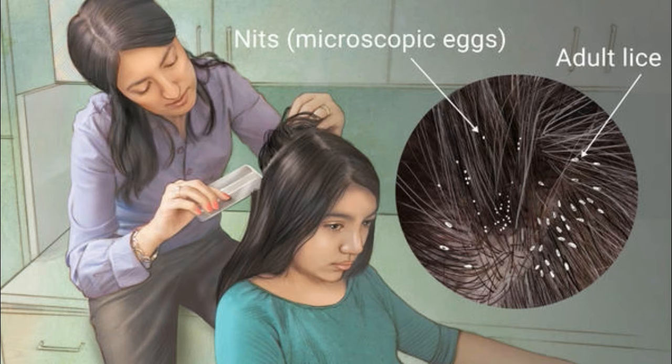Symptoms of Pediculosis Capitis. The symptoms of lice infestation are not visible in the first 2-6 weeks, but some of the common signs and symptoms are continuous itching in the scalp, neck and ears, visibility of lice on the scalp, and lice eggs on hair shafts. The lice can only be spotted around the ears or near the hairline of the neck. Medical care should be taken immediately if suspected of the above symptoms.